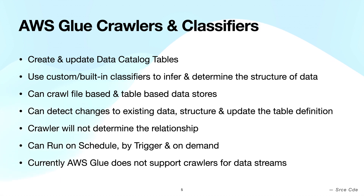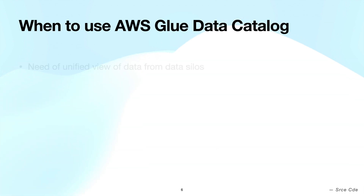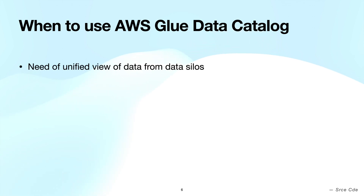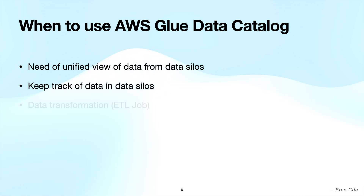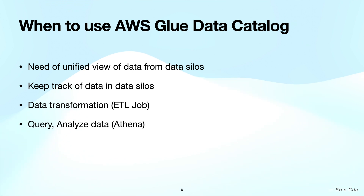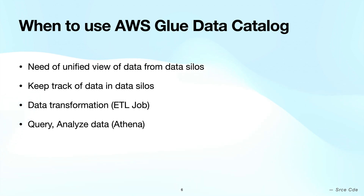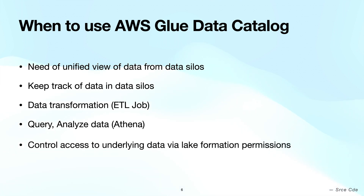Now let's understand when to use AWS Glue Data Catalog. Use it when you want a unified view of data from different data sources or data silos and want to track all data operations or changes. Another example is when you want to move data from source to destination with certain changes. Also, when you want to query data sitting at different locations — if you have a unified view via Data Catalog, you can easily query using Athena. From a security standpoint, if you want to control access to tables and databases at a granular level, you can use Data Catalog together with AWS IAM policies and Lake Formation.